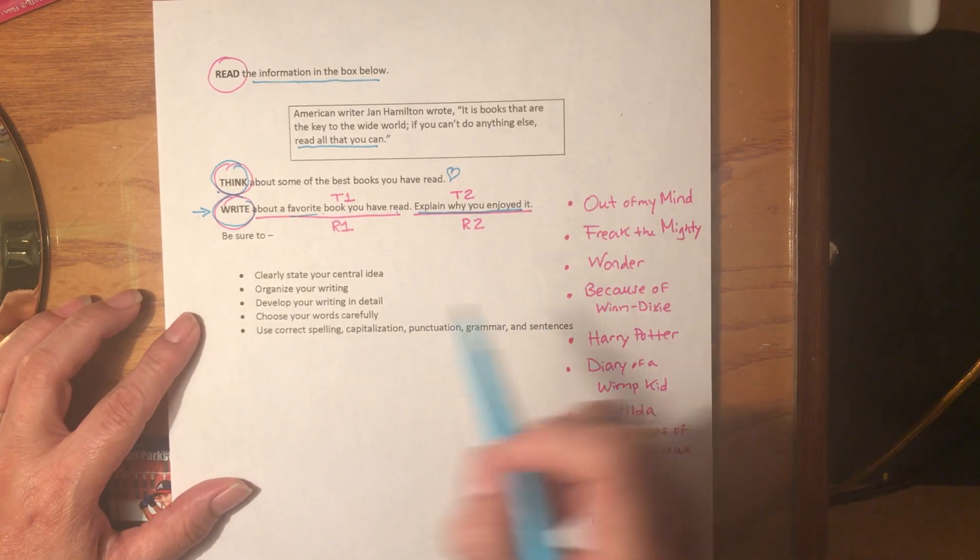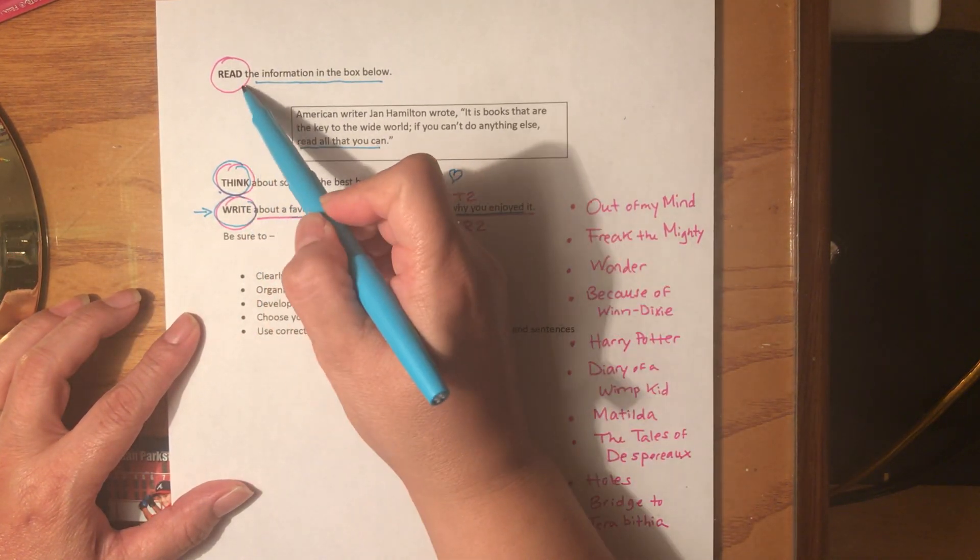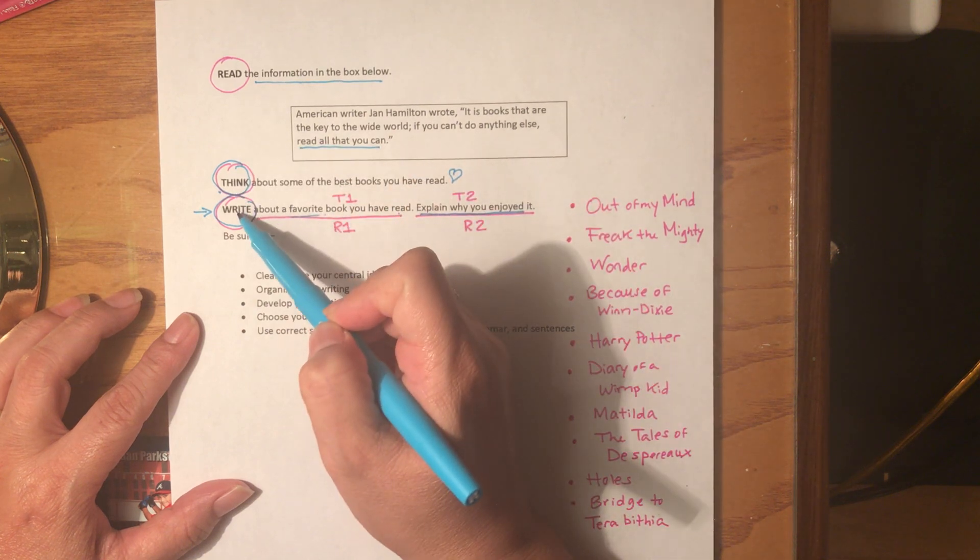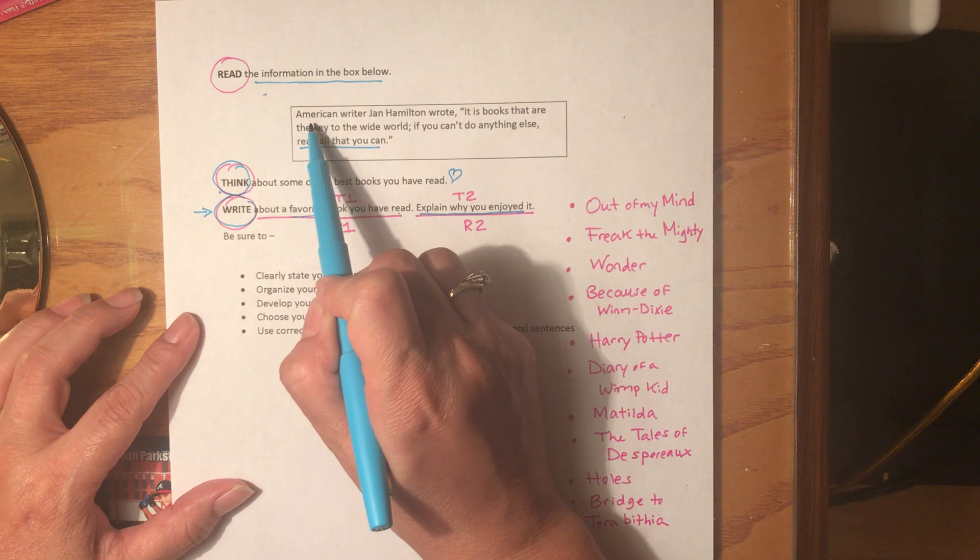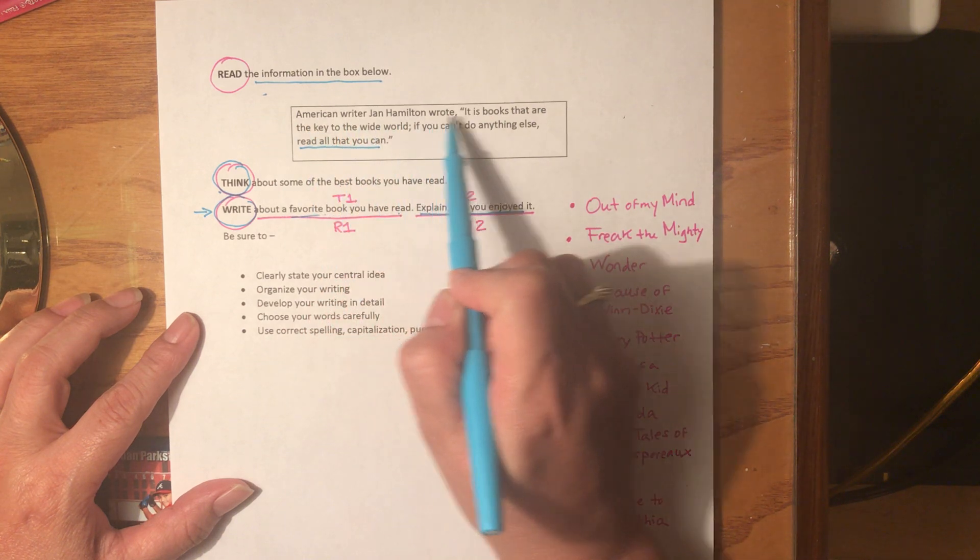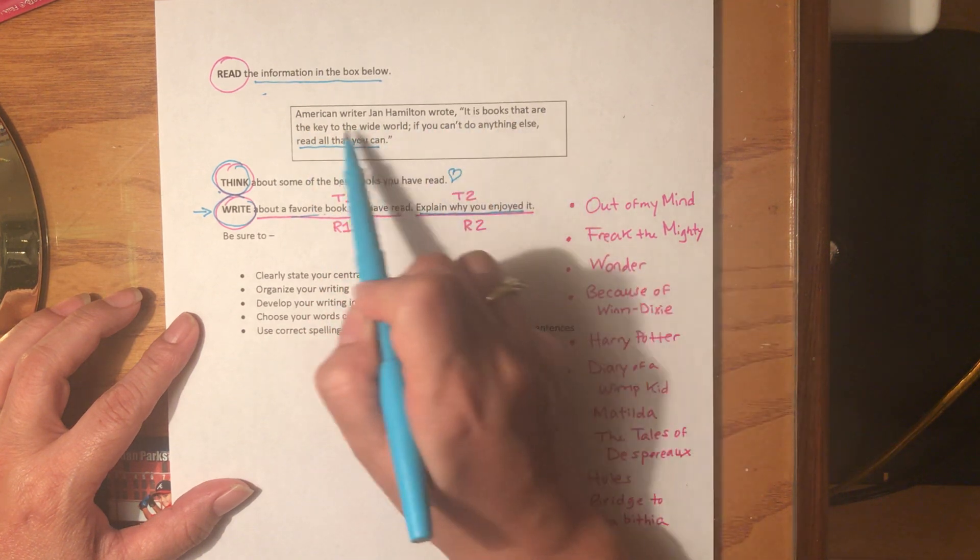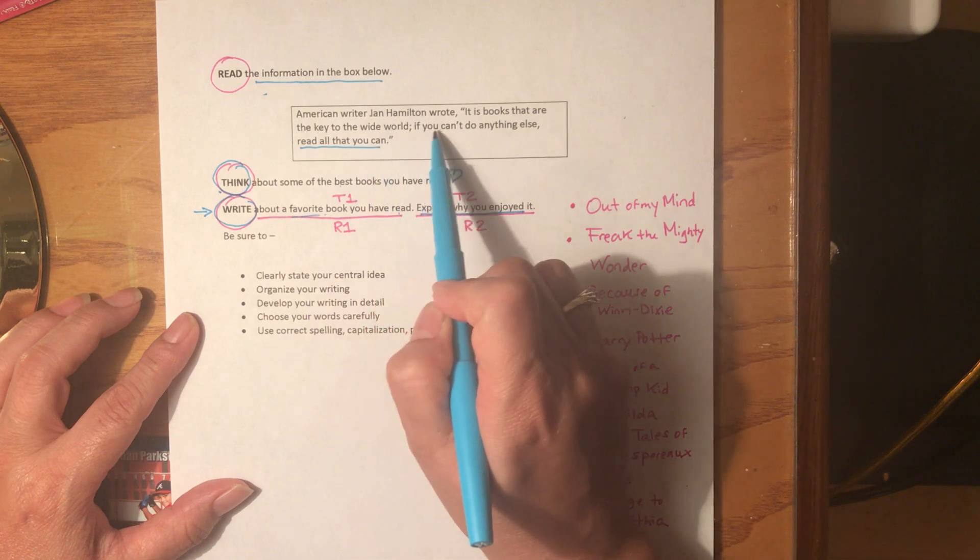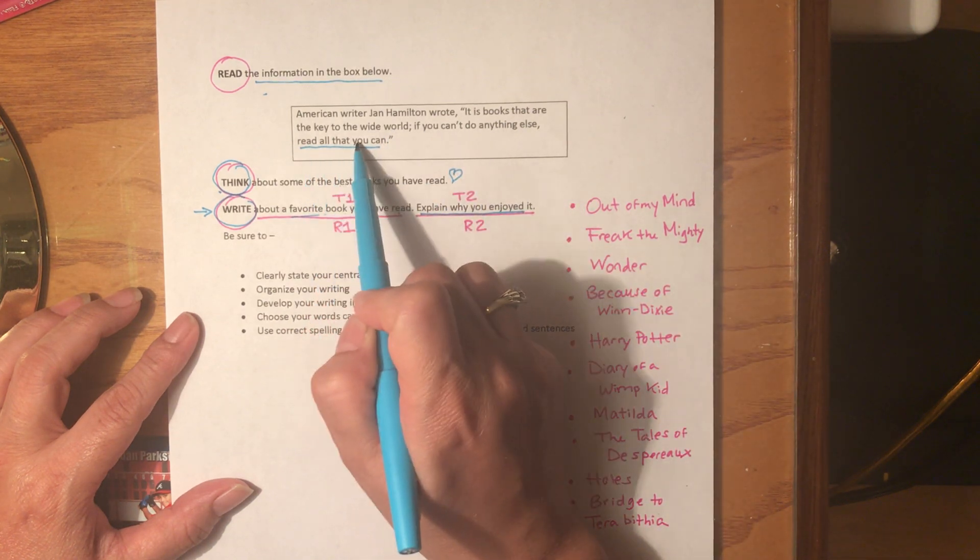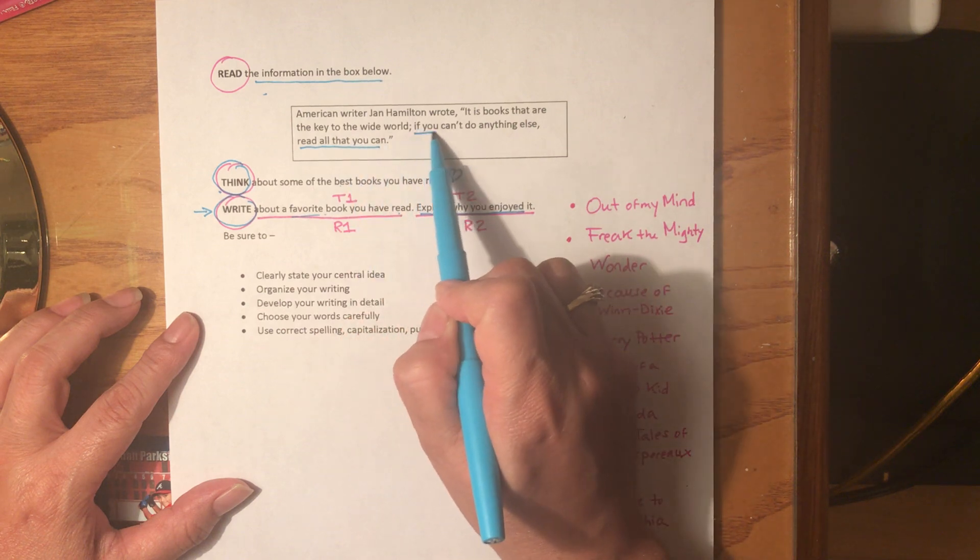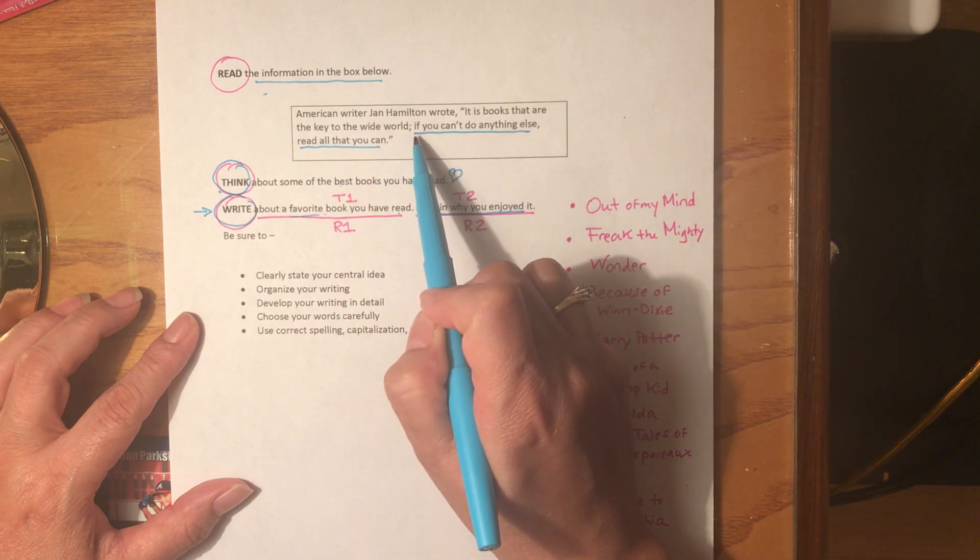Okay, when you see this page, you are going to read, think, and write. Read the information in the box below. American writer Jan Hamilton wrote: 'It is books that are the key to the wide world. If you can't do anything else, read all that you can.'